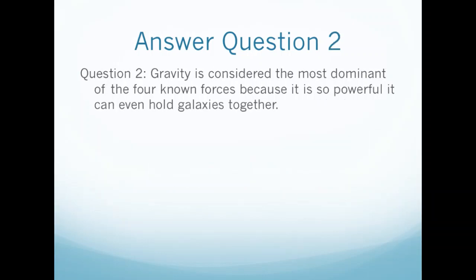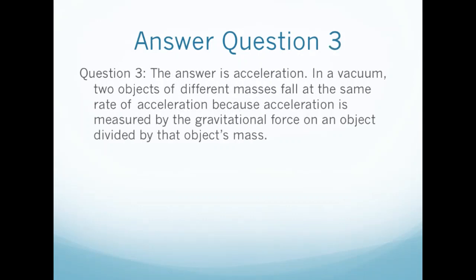Answer to Question 2: Gravity is considered the most dominant of the four known forces because it is so powerful it can even hold galaxies together. Answer to Question 3: The answer is acceleration. In a vacuum, two objects with different masses fall at the same rate of acceleration because acceleration is measured by the gravitational force of an object divided by that object's mass.